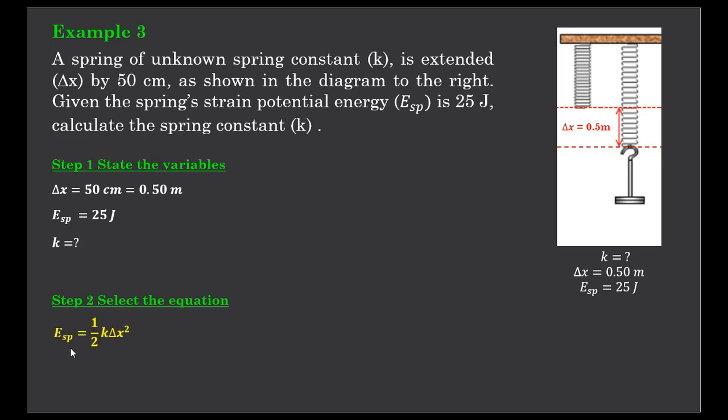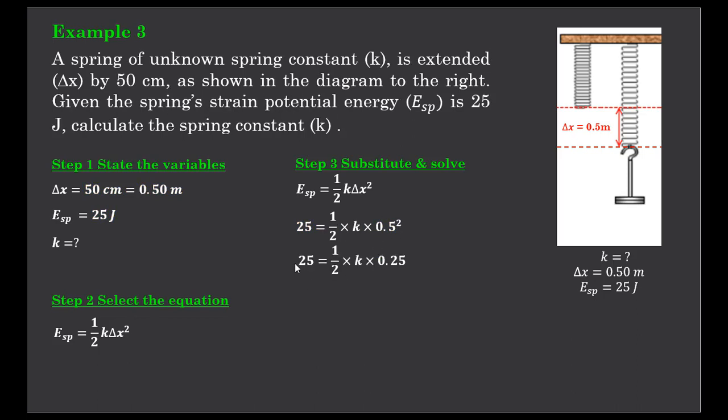Our equation, as we have used for the last two examples: the strain potential energy of the spring is equal to half times spring constant k, multiplied by the extension delta x squared. Let's sub in our values. So we know the strain potential is 25 joules on the left hand side of my equation, and we know the delta x is 0.5 of a meter. k is the unknown. Let's expand this 0.5. So we have 25 equals a half k times 0.25.